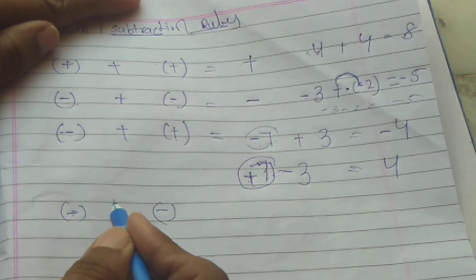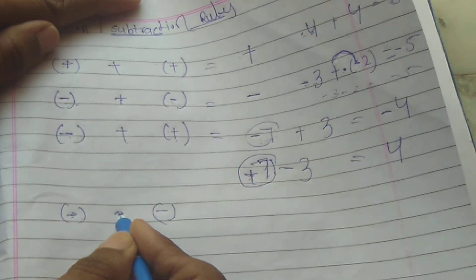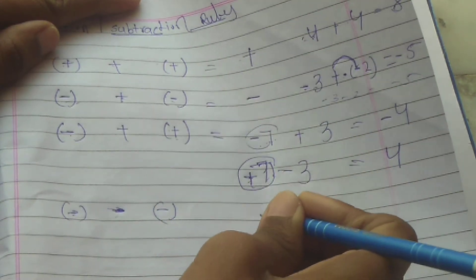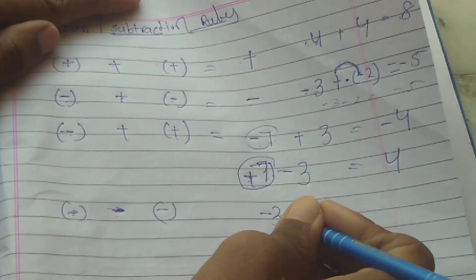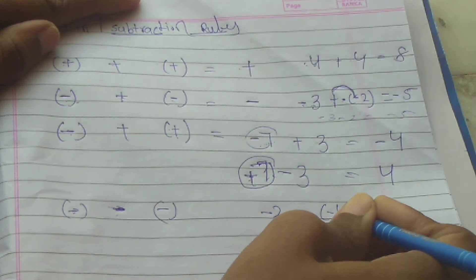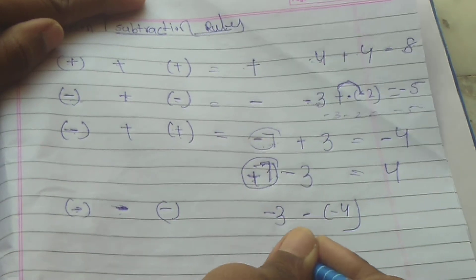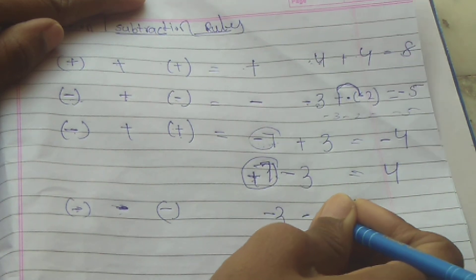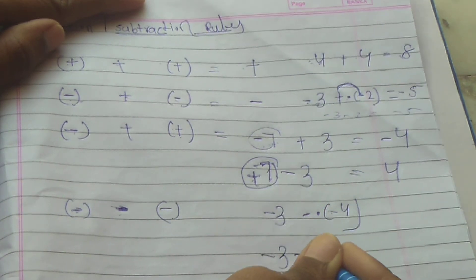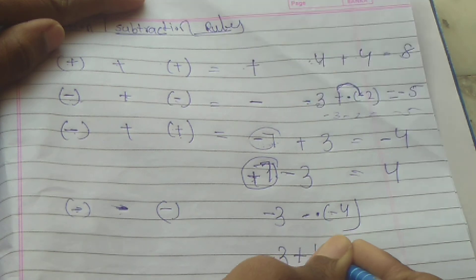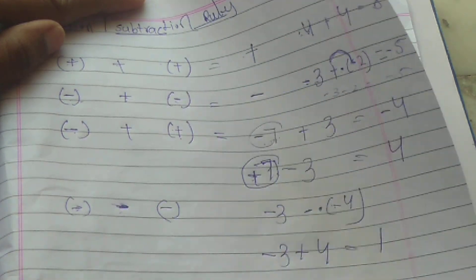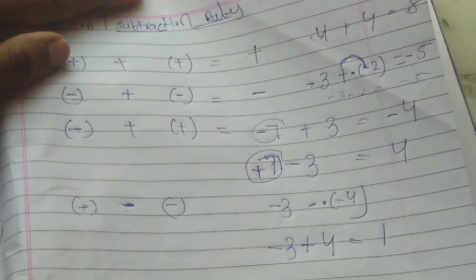Minus minus minus — two negative numbers: when a minus sign follows a minus, they combine. For example, minus 3 into minus minus 4: the minus into minus becomes plus 4, so the result is plus 1.